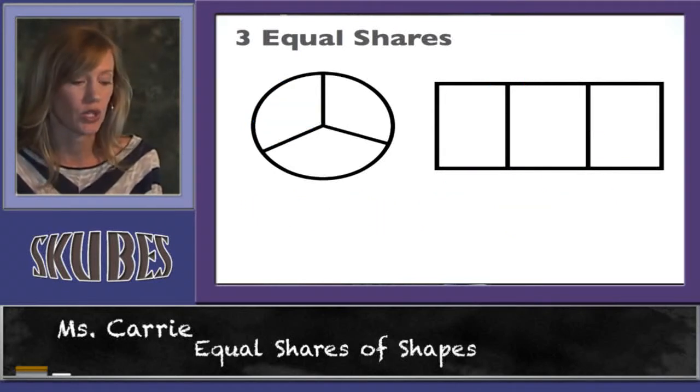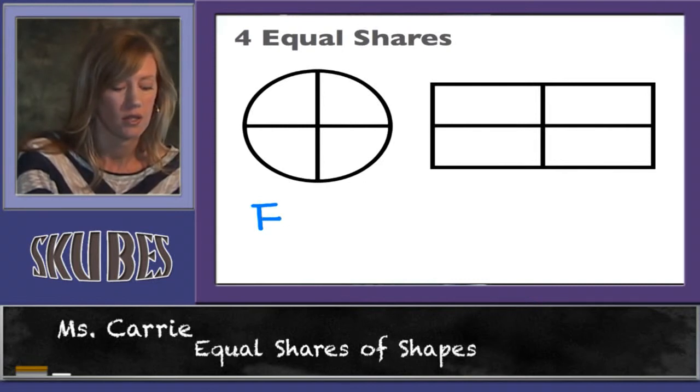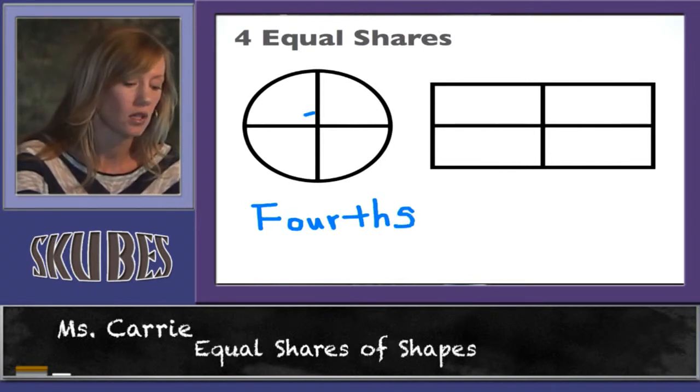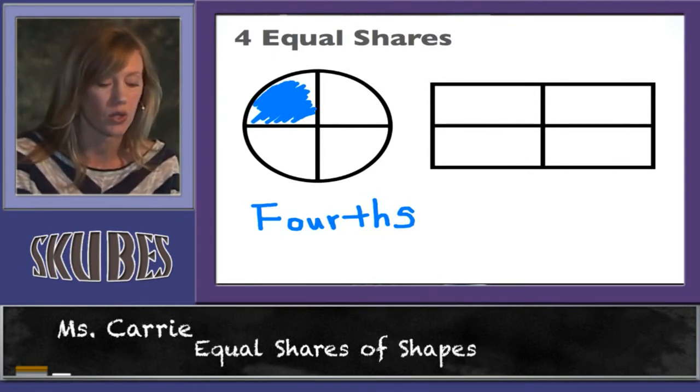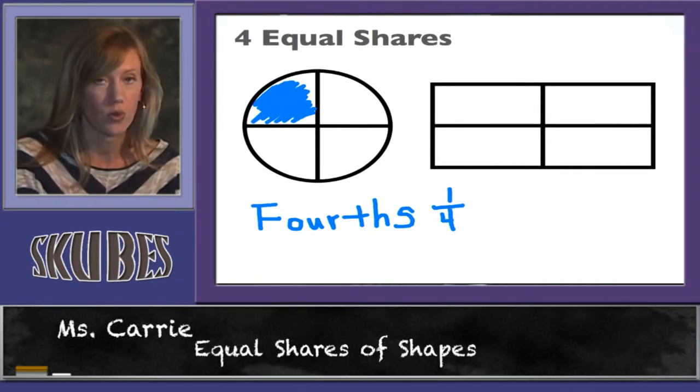Let's look at four equal shares. These are divided into what we call fourths. If we decided to color one piece. We would have colored one fourth of that circle. One is the amount we colored. Your line means out of, four total pieces. So that was one fourth.